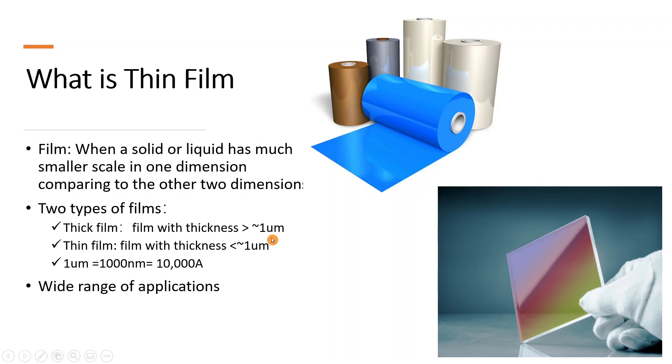When the film thickness goes below one micrometer, usually we don't use a micrometer, it's easier to use a nanometer or angstrom. So basically one micrometer equal to a thousand nanometers and equal to 10,000 angstroms.